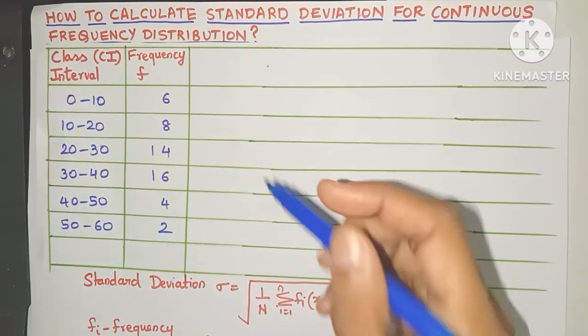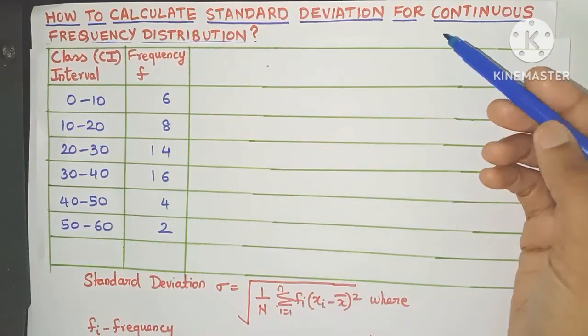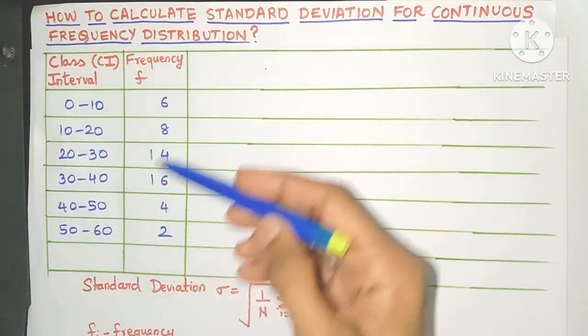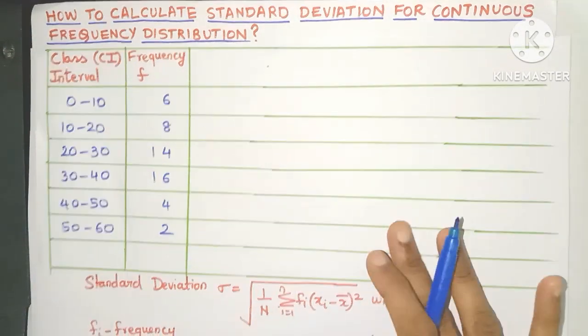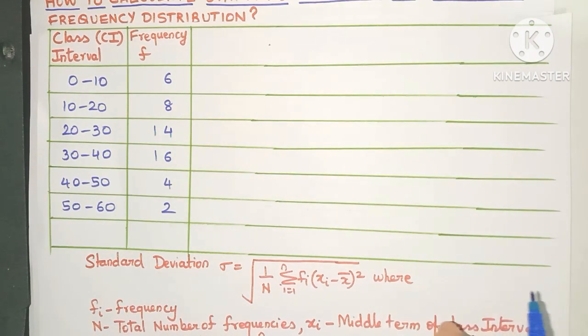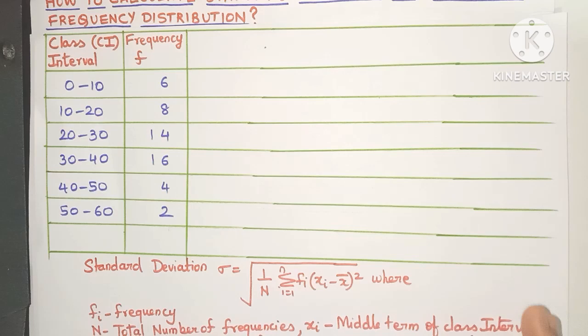Hello everyone, today let's learn how to find the standard deviation for continuous frequency distribution. So here is the class interval column and this is the frequency column.